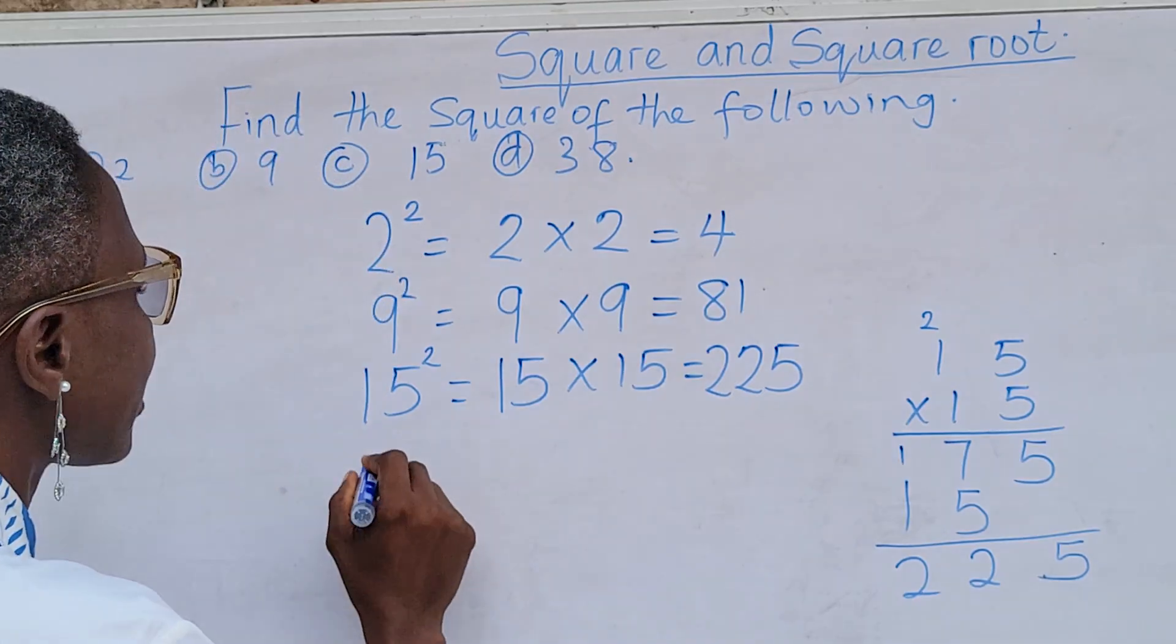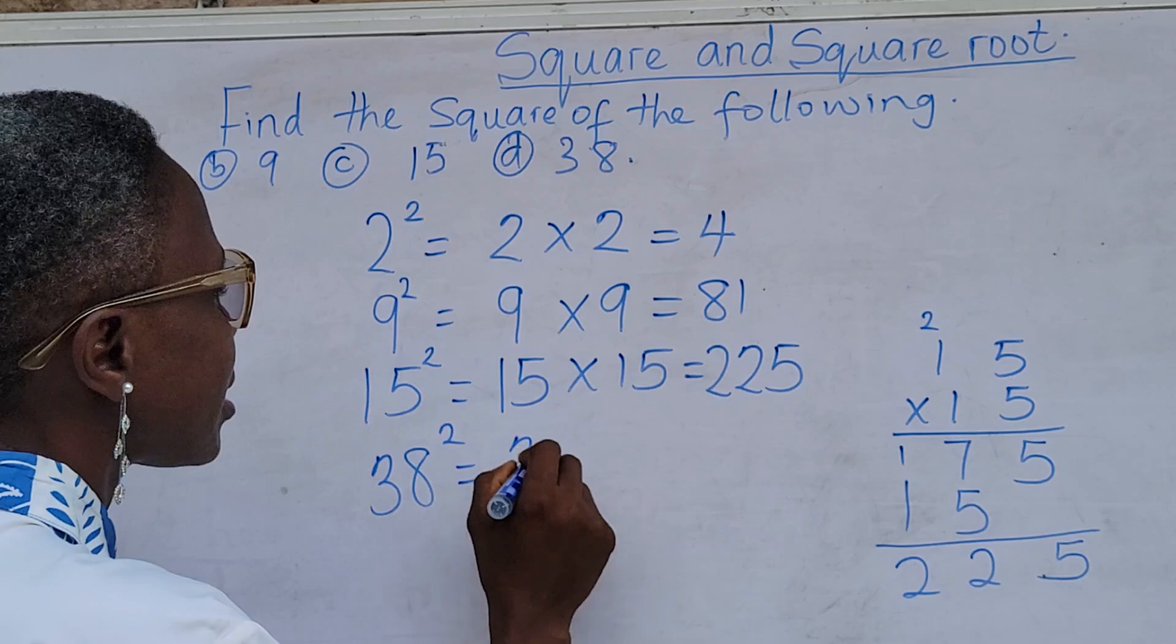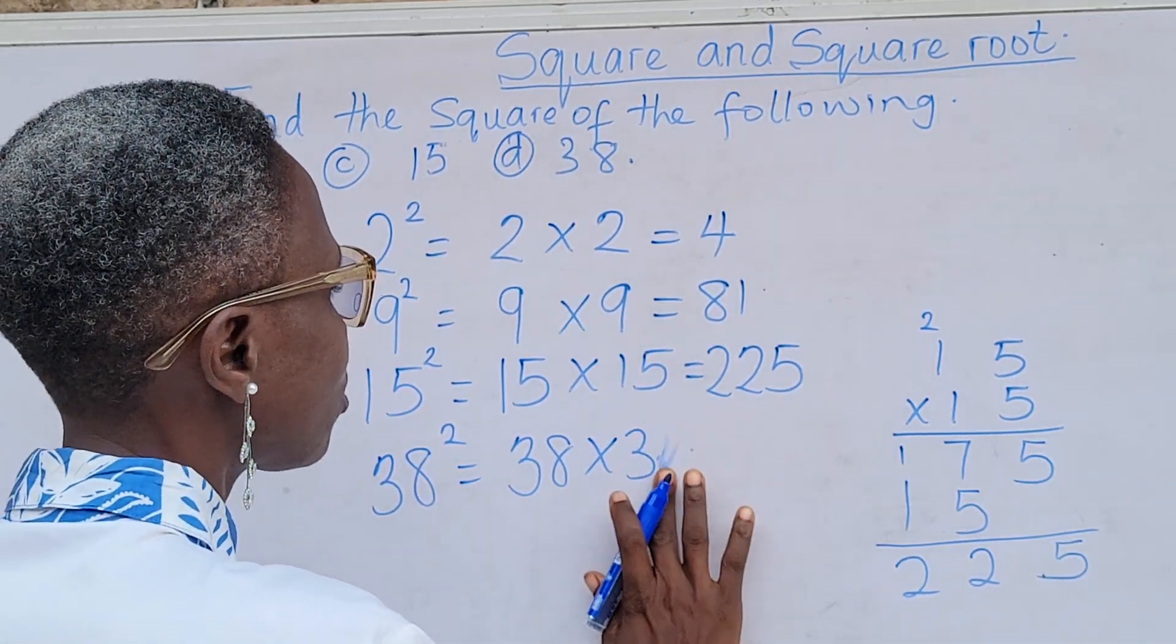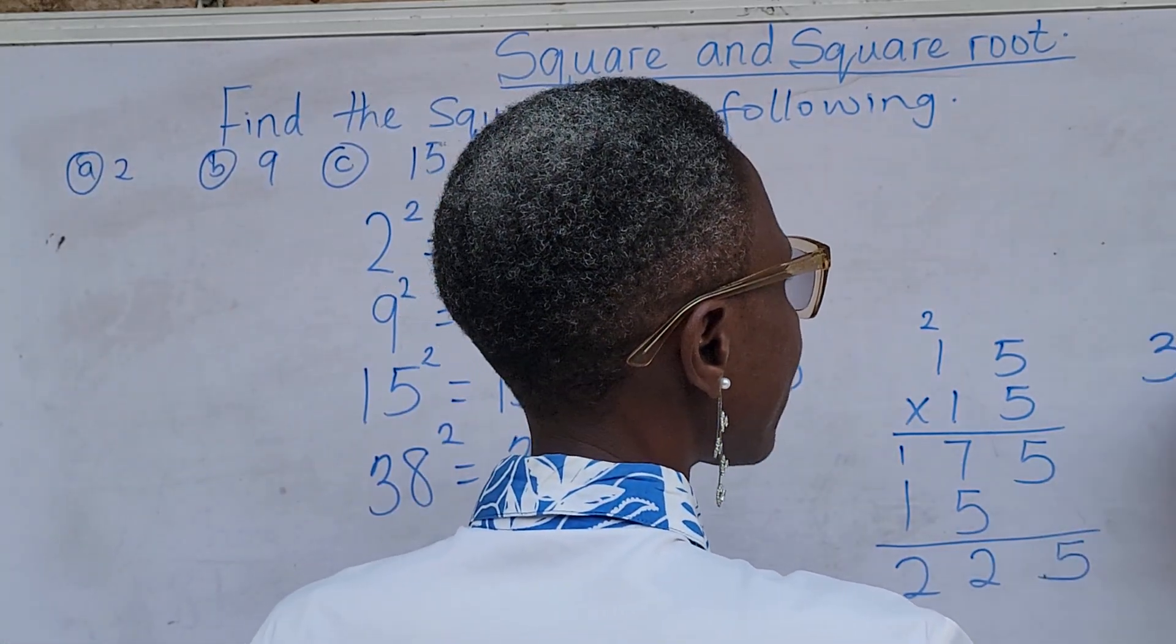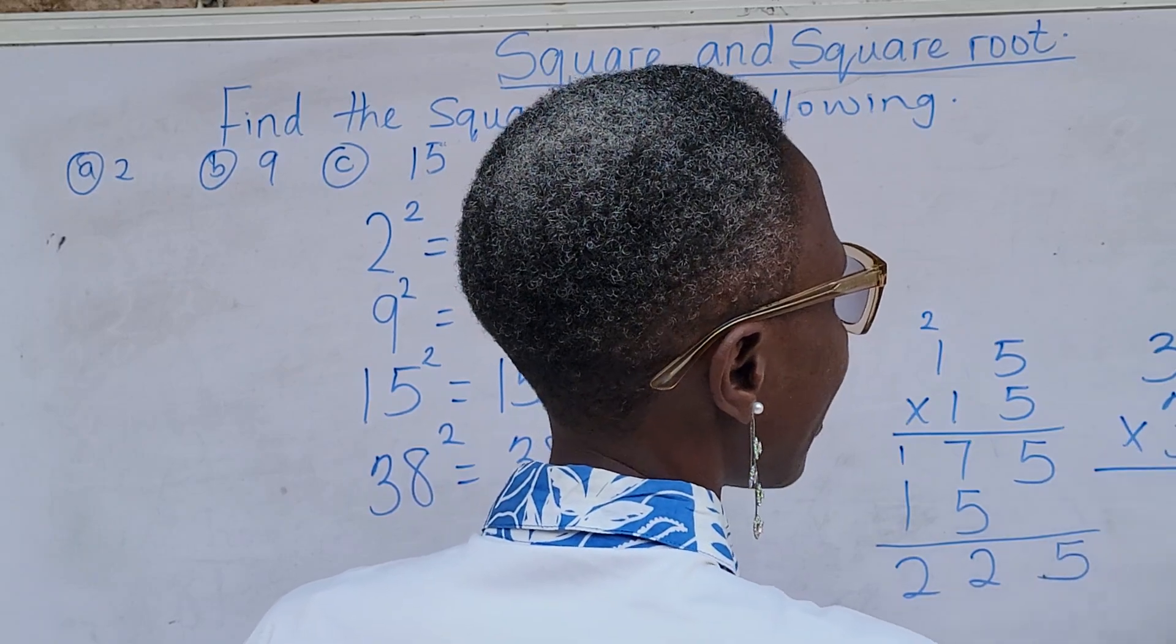Now, we have 38. 38 square means 38 times 38. So, at any point in time, if you are told to find the square of a number, just multiply that number by itself. Now, let's do this.